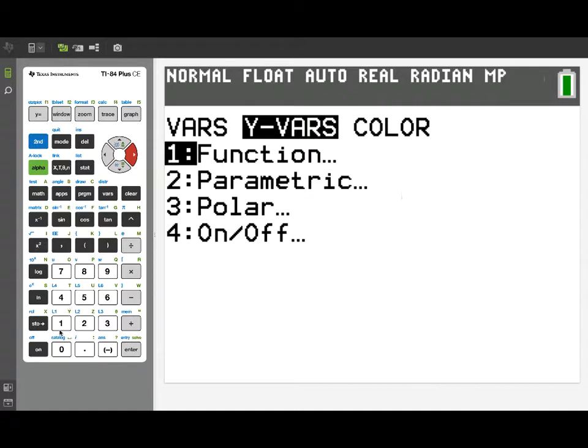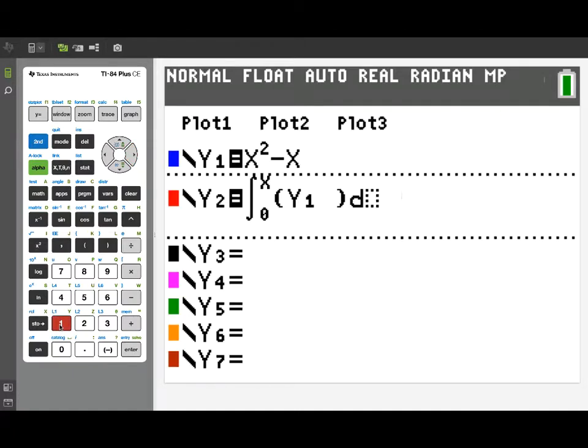Now we're going to integrate our original function, which we have stored in y1, and I'm going to try to use good form here, as we really shouldn't use the same variable of integration as we use in that upper limit. So I'm going to use the variable t, so we'll be integrating from 0 to x, y1 of t, dt.